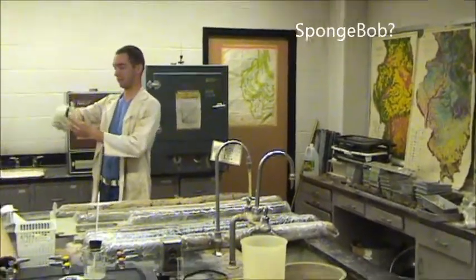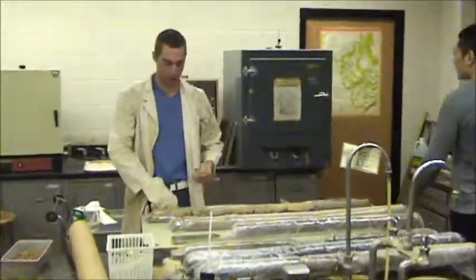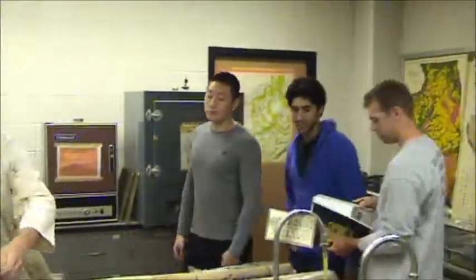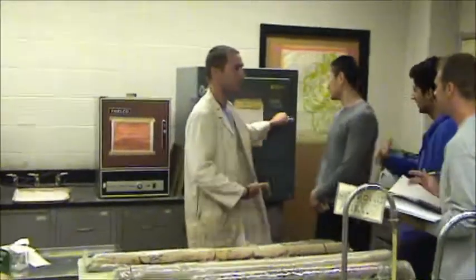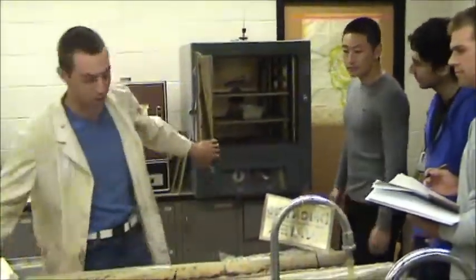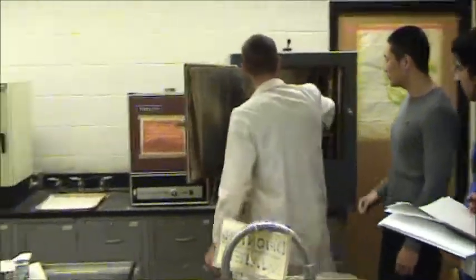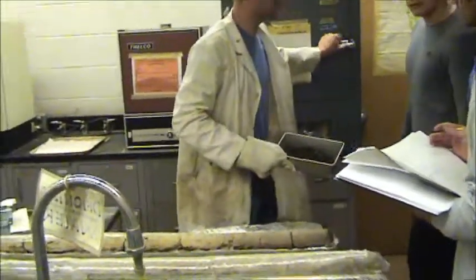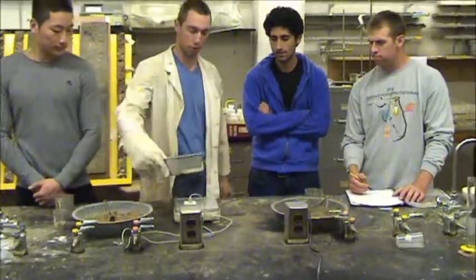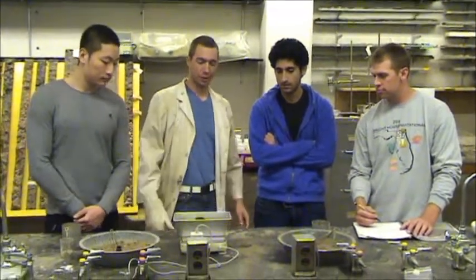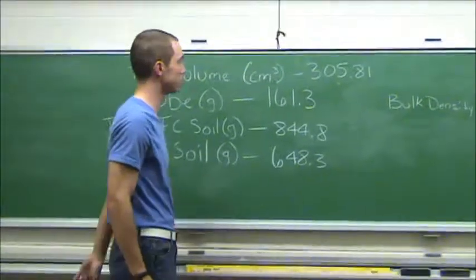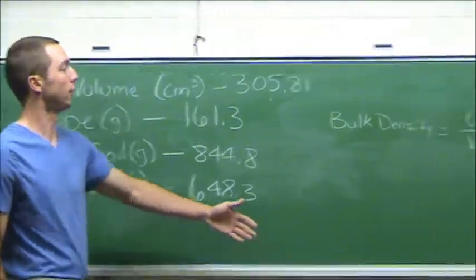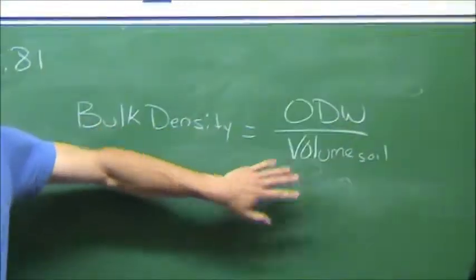24 hours later. So we'll go ahead and get our soil out — it's been drying for 24 hours. Let me get my glove on because it's going to be really hot. So we'll take this back over to the scale and get our weight for it. So we're here at the scale — we'll go ahead and get our oven dry weight of the soil. It's 648.3 grams. So now we have all the numbers we need for our calculations. Our formula for bulk density is the oven dry weight of the soil over the total volume of the soil.